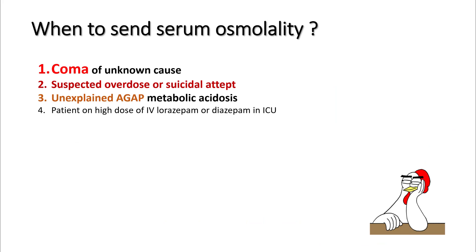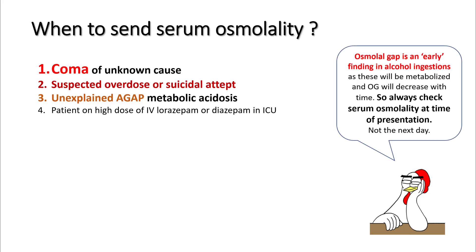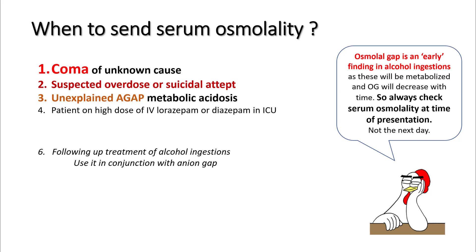So when do you send serum osmolality? If you encounter a patient with coma of unknown cause, suspected overdose or suicidal attempt, or unexplained anion gap metabolic acidosis, it is wise to send a serum osmolality and calculate the osmolal gap. Patients in the ICU on IV lorazepam or diazepam drips also need to be monitored for serum osmolality. Remember that an elevated osmolal gap is an early finding in alcohol ingestion, since these alcohols get metabolized and the osmolal gap will decrease over time — so always check serum osmolality at the time of presentation. You can also use osmolal gap to follow treatment of alcohol ingestion along with anion gaps.